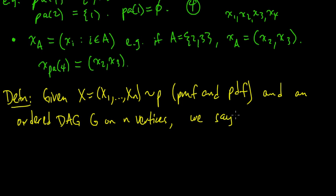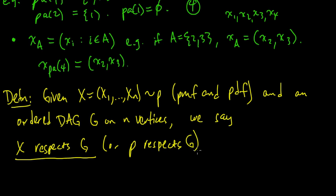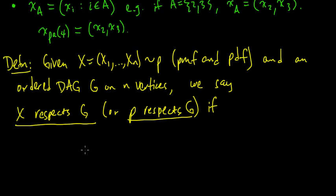we say that x respects, respects G, or sometimes we say that the distribution P respects G, if the distribution can be factored as, do I have room over here? Let me put it down here in case I run out of room. The joint distribution equals the product